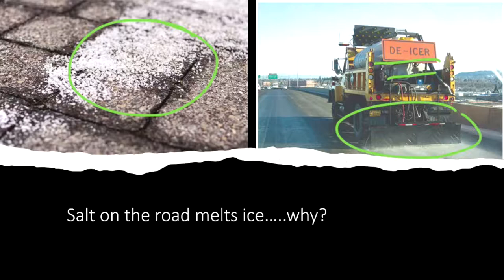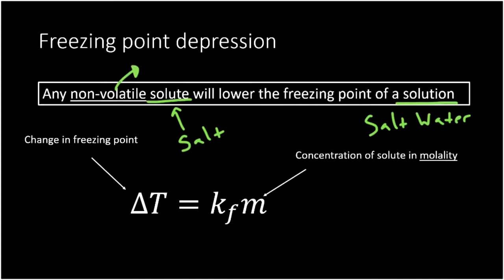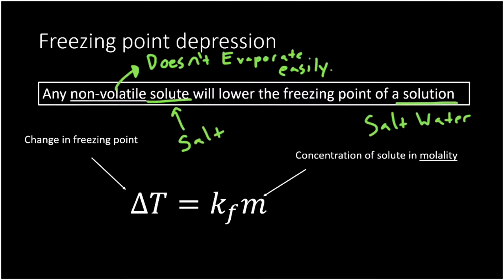But why does that ice melt? It melts because of freezing point depression. Anytime I add a non-volatile solute, it's going to lower the freezing point of the solution. The non-volatile solute we're adding on those roads is salt, and the solution we're lowering the freezing point of is salt water. When we mix water and salt, it has a lower freezing point than just water by itself. A non-volatile solute doesn't evaporate easily. Ionic compounds are a good example — they have really strong intermolecular forces and don't evaporate easily.